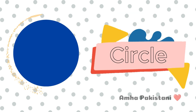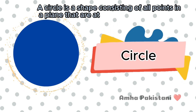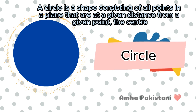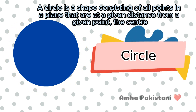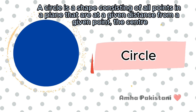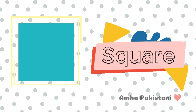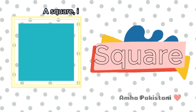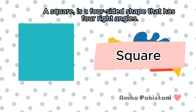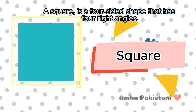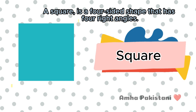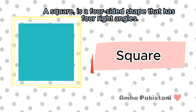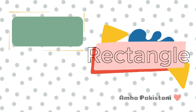Circle. A circle is a shape consisting of all points in a plane that are at a given distance from a given point — the center. Circle. Square. A square is a four-sided shape that has four right angles. Square.